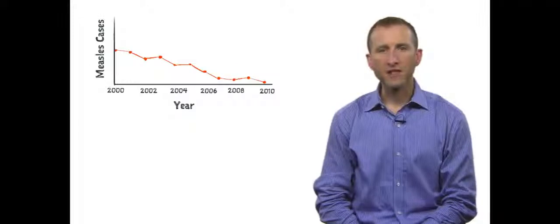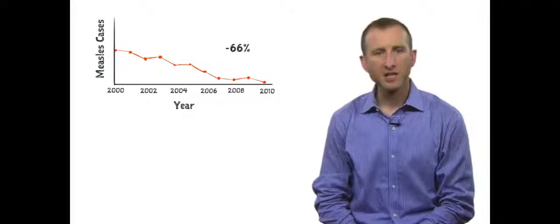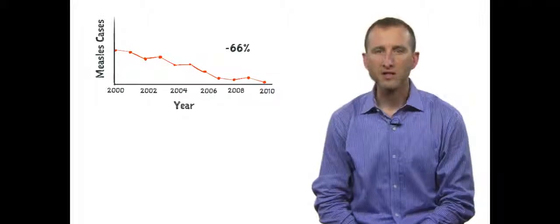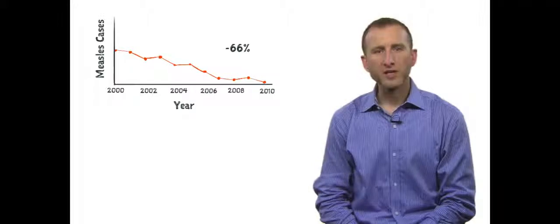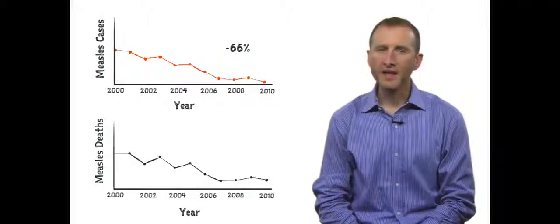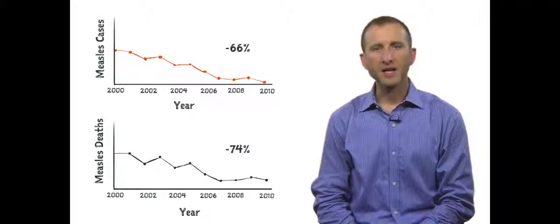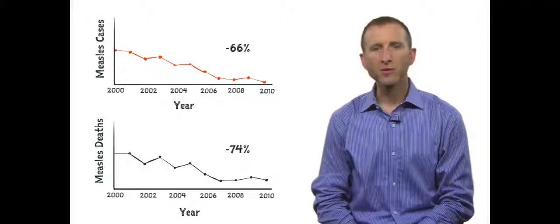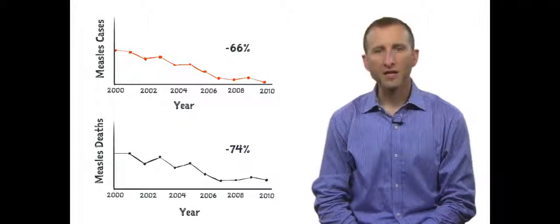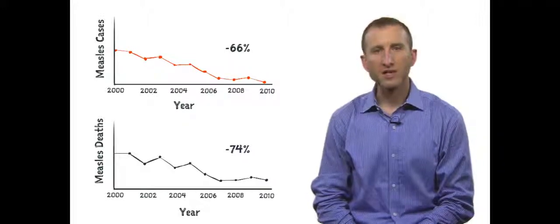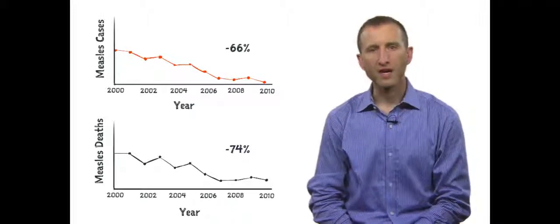A recent study found that worldwide vaccination efforts led to a 66 percent reduction in measles cases from 2000 to 2010. However, over the same time, mortality due to measles was estimated to have declined by 74 percent because the average age at which children were infected with measles increased, and the rate of fatal complications due to measles infection declines precipitously in children greater than five years of age.